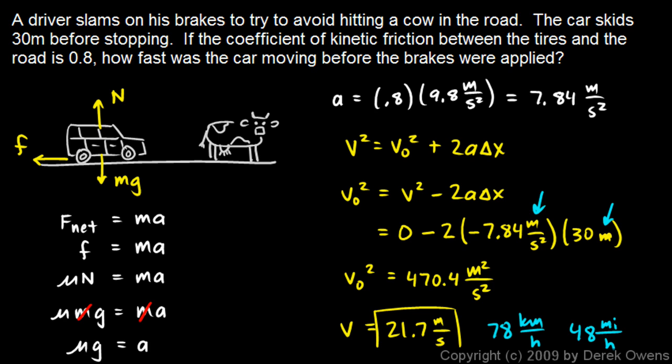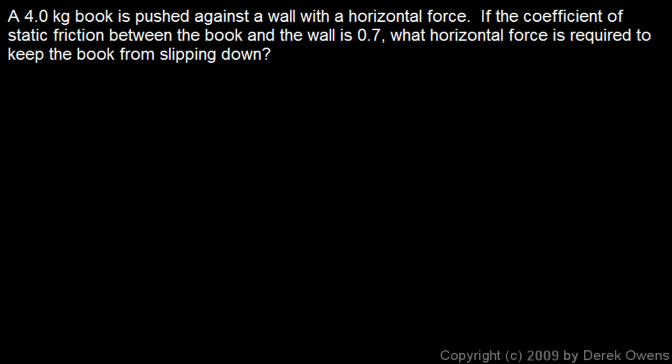Okay, one more example problem here. A four kilogram book is pushed against a wall with a horizontal force. So a picture would look like this: here's the wall and here's the book, and there's a force being used - we'll call it F - to press the book against the wall. And that force is horizontal. So the wall is pushing back and we'll call that force the normal force.